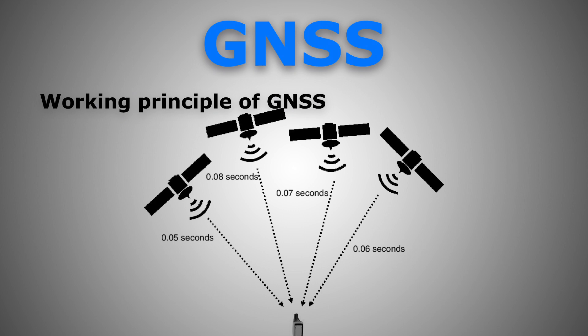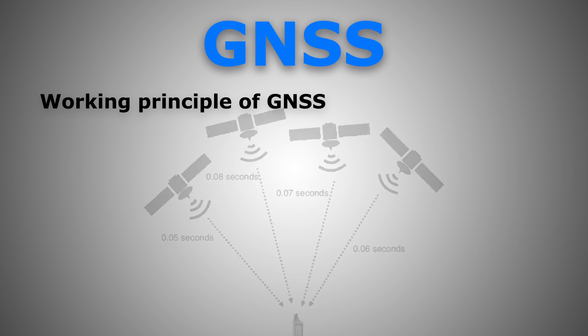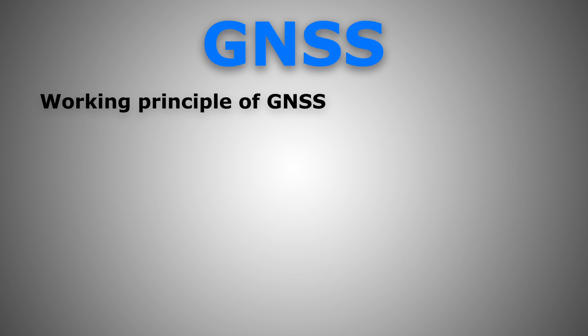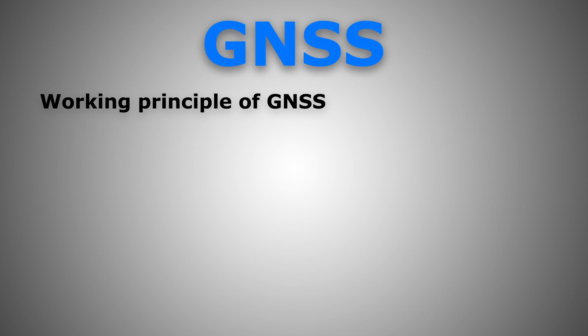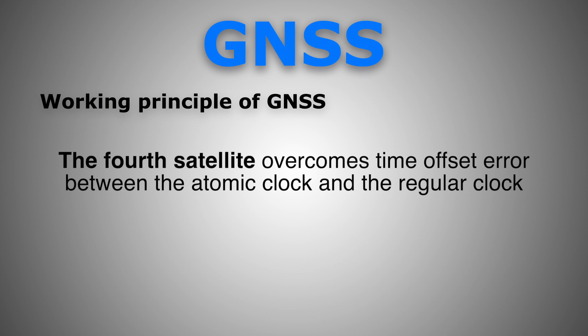You may ask: why do we need four satellites — wouldn't three suffice? The accuracy of our GPS position depends on how accurately we measure that duration between transmission and reception. Even a nanosecond error can produce dozens if not hundreds of kilometers of position error. This is why satellites are equipped with atomic clocks, which are extremely accurate — and expensive — making them impractical for smartphones, cars, or planes. This is where the fourth satellite comes in: it overcomes the time offset between the receiver clock and the satellite's atomic clock.